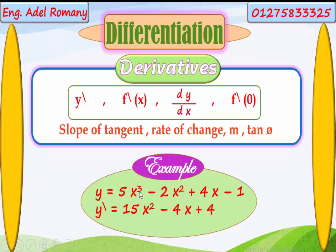The rule: we multiply the power times the coefficient. That means 3 times 5 equals 15, and decrease the power by 1. So 5x to the power of 3 becomes 15x to the power of 2. This is the first term.